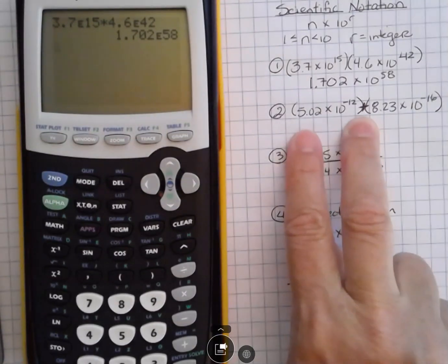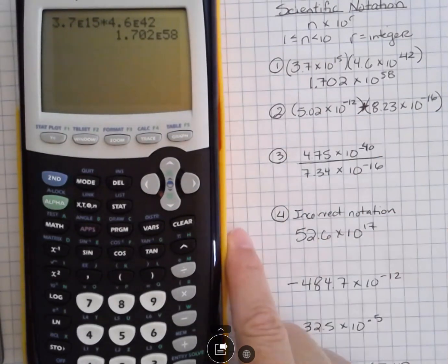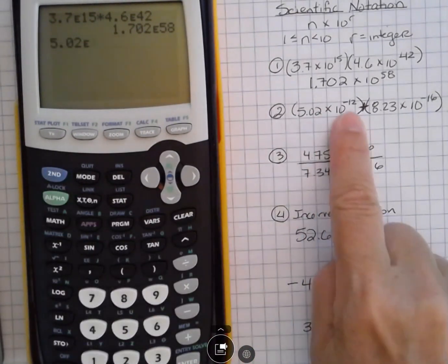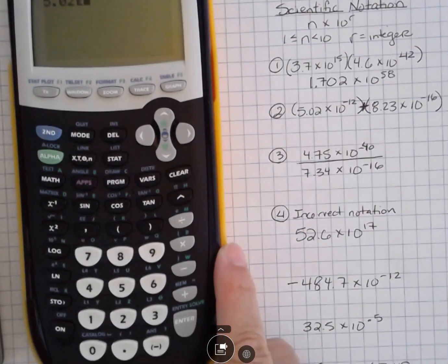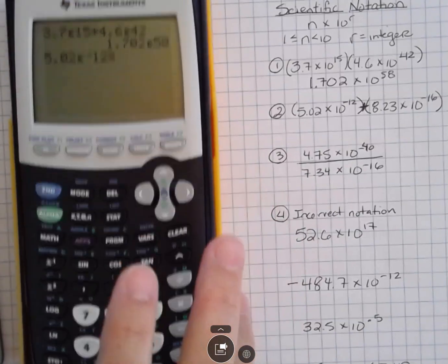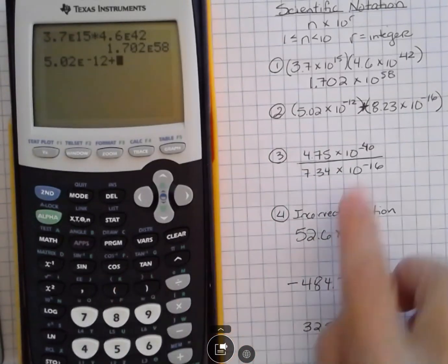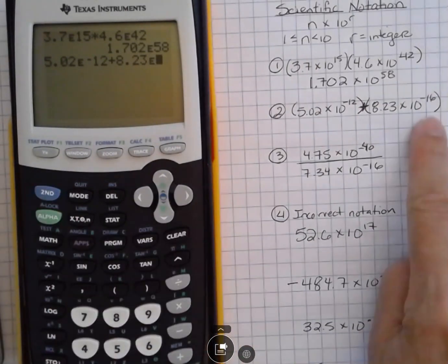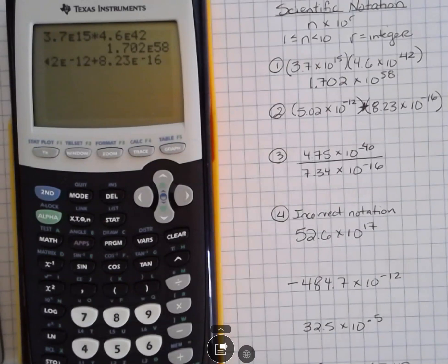In the second one, I'm going to actually add these. I was going to multiply, but I decided to add instead. So 5.02, second function EE, the power is negative 12. Make sure when you put the negative in, you're using this negative button at the bottom. And then we're adding 8.23, second function EE, negative 16, and then just hit enter, and it's going to give you this answer.